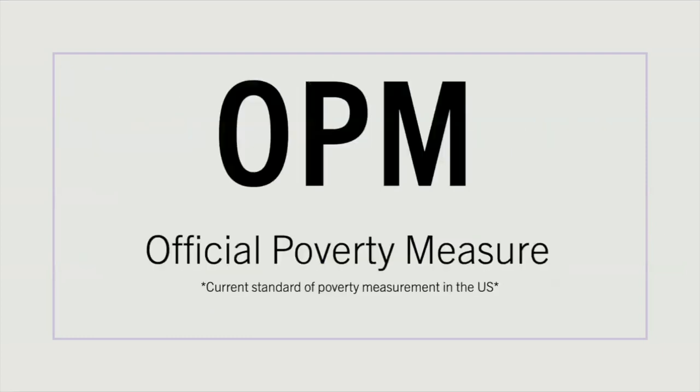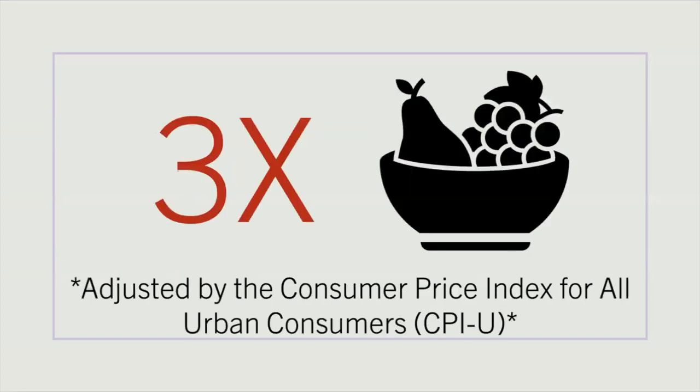Before we dive into what we think is the best way to measure poverty, we will review the current standard of measurement in the United States, the OPM, or the Official Poverty Measure. The OPM estimates how many people are unable to afford necessities without government assistance. This measurement is based on the average national cost of food from the 1960s, but is adjusted every year to reflect inflation. The Census Bureau determines who is in poverty by comparing pre-tax income to a threshold set to three times the cost of a food basket. The threshold is also adjusted depending on family size and composition.